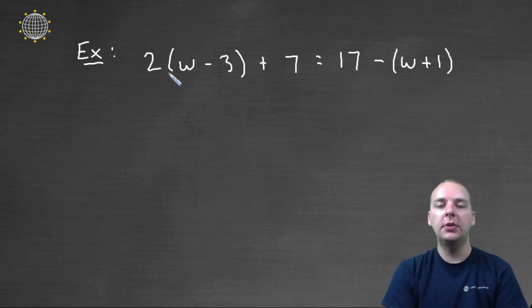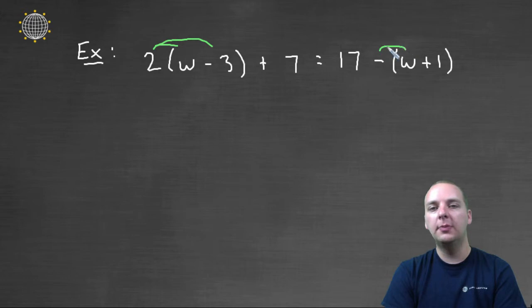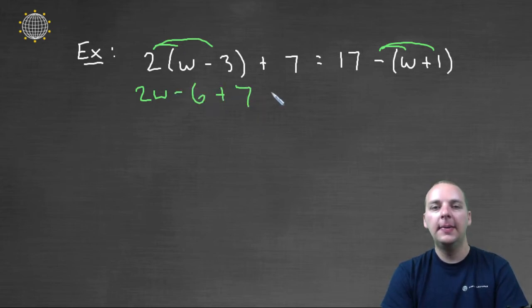Here I have 2(w - 3) + 7 = 17 - (w + 1). A lot of stuff to do in this one. The step one in your notes says to simplify both sides. That includes distributing any constants like the 2 or this minus sign right here. So let's do that first.